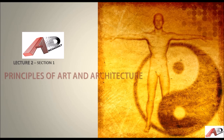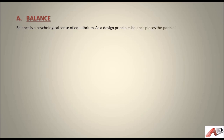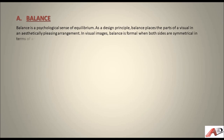Hello students, let's begin with lecture 2: Principles of Art and Architecture. Balance is a psychological sense of equilibrium. As a design principle, balance places the parts of a visual in an aesthetically pleasing arrangement. In visual images, balance is formal when both sides are symmetrical in terms of arrangement.